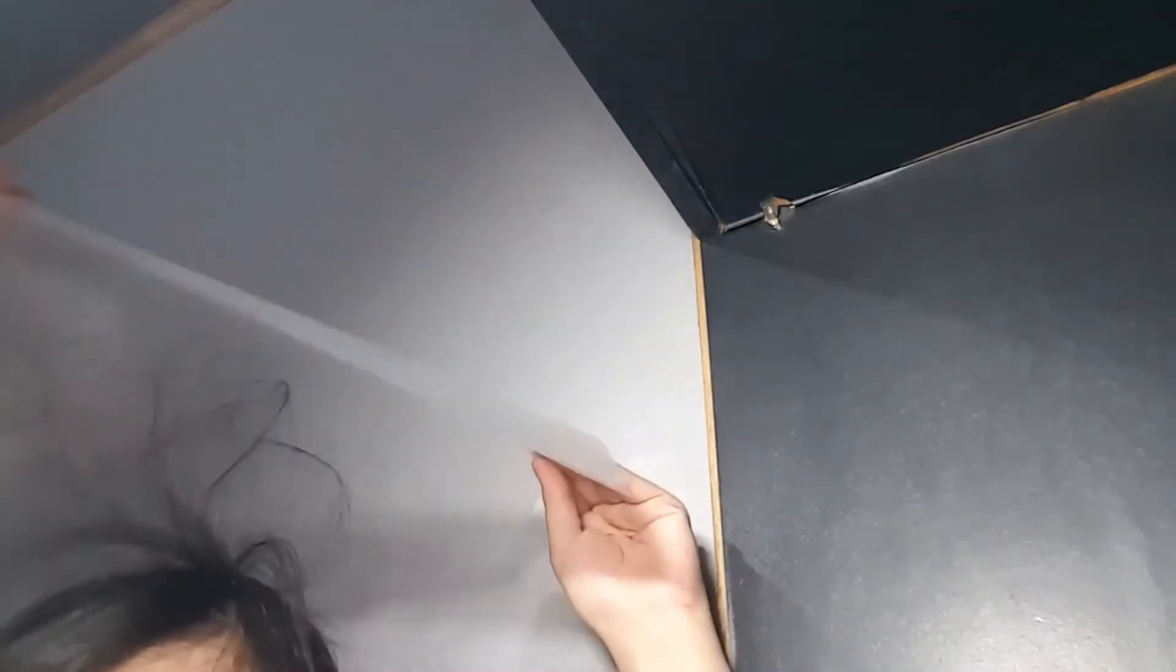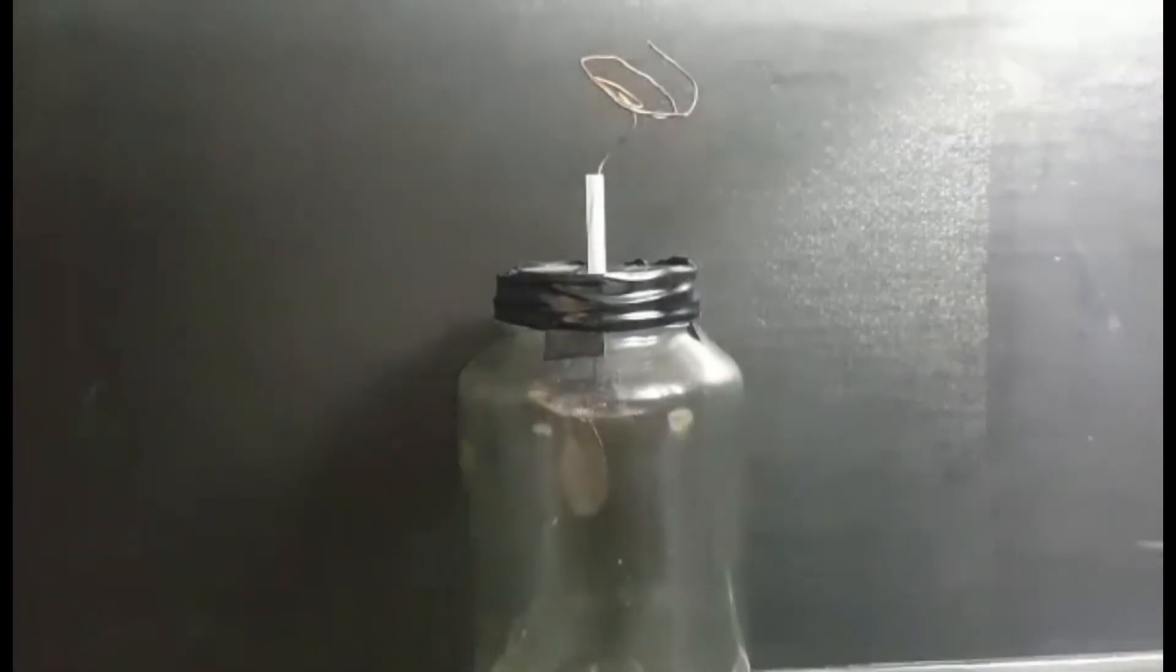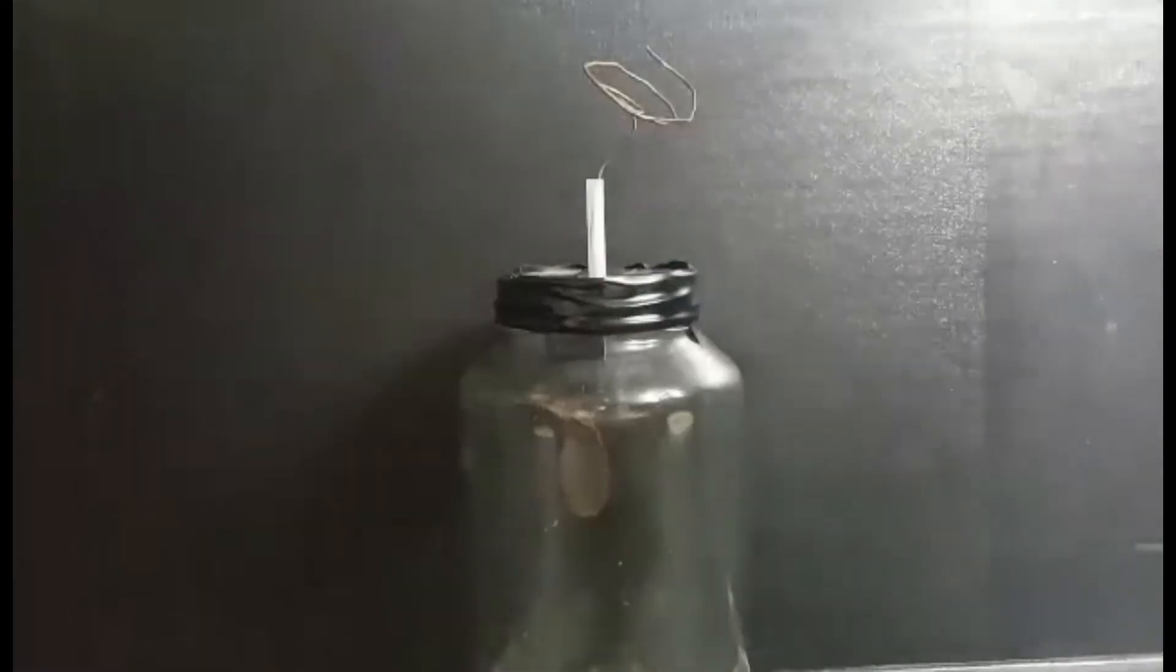Now it's time to give our materials a static charge. Rub each of your materials vigorously. After you give each of your objects a charge, bring each object near the coil wire and the electroscope.